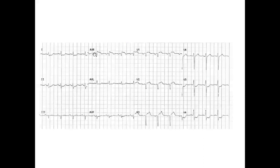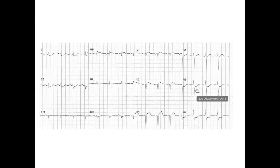In order to consider ST elevation in AVR as an MI equivalent, we should have corresponding ST depressions in V5 and V6. However, context is important — if this is an ECG of a patient with LVH with corresponding ST depressions in V5 and V6 and ST elevation in AVR, this cannot be considered an MI equivalent, because LVH also causes ST depressions.